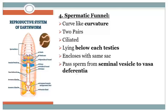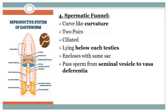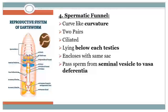The next part is the spermatic funnel. The spermatic funnel is a white curled ciliated part which is present in a pair and also present in the 10th and 11th segments, enclosed within the same sac, which helps to pass the sperm from the seminal vesicle to the vasa differentia.